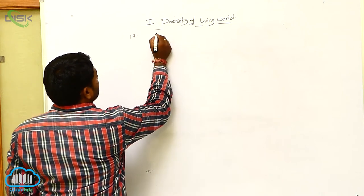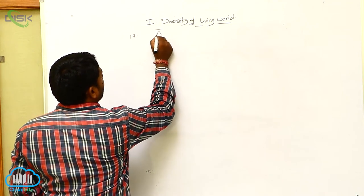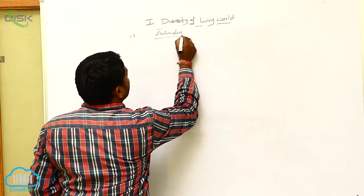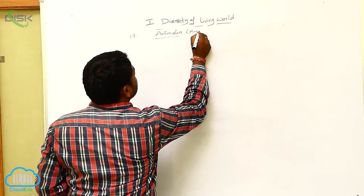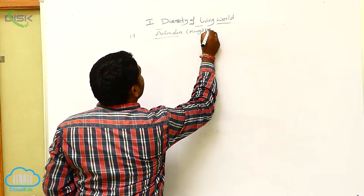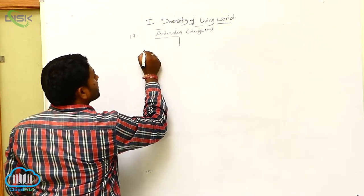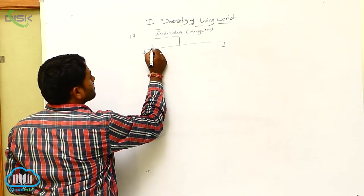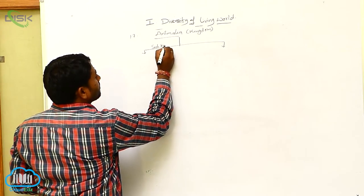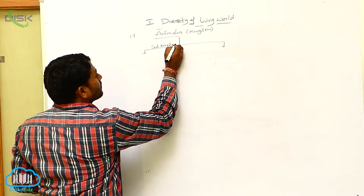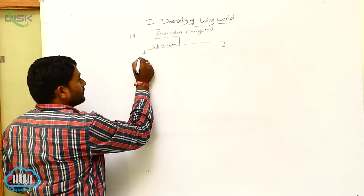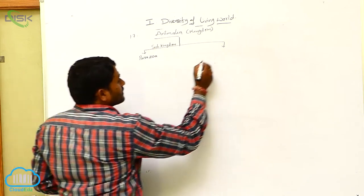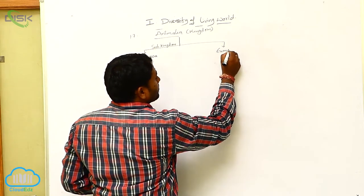This is 1.7 Animalia. Animalia is a kingdom. The Animalia kingdom is divided into two sub-kingdoms. The first one is Parazoa, and the second one is Eumetazoa.